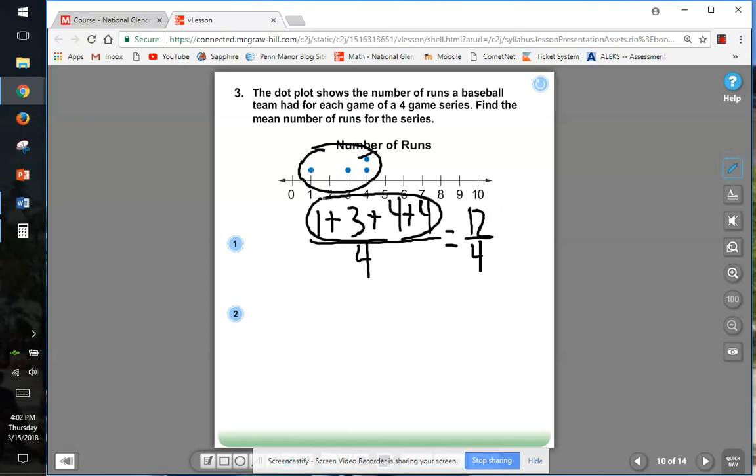If there were five in the data set, we'd divide by five, but there isn't. Hey, what's 12 divided by four? You got it right, it's three. So ladies and gentlemen, the mean average of that data set is three.